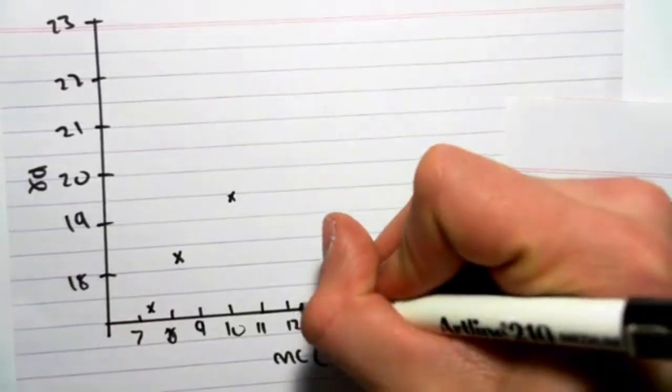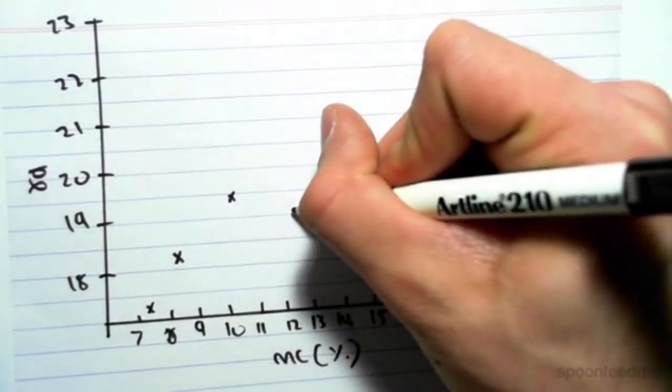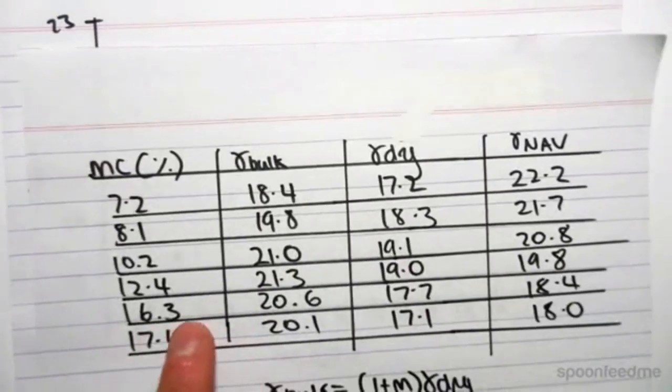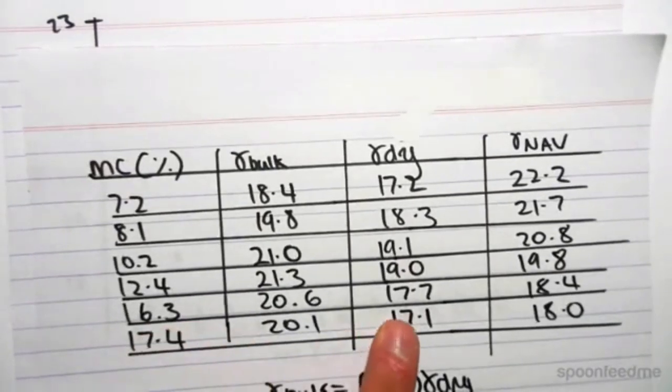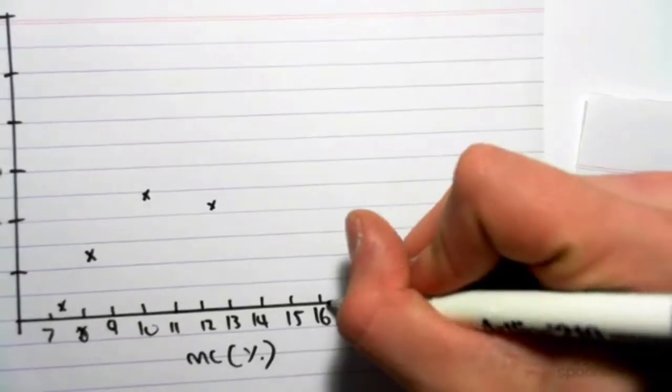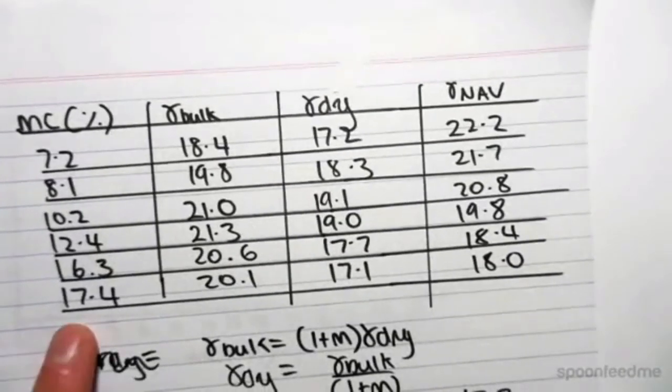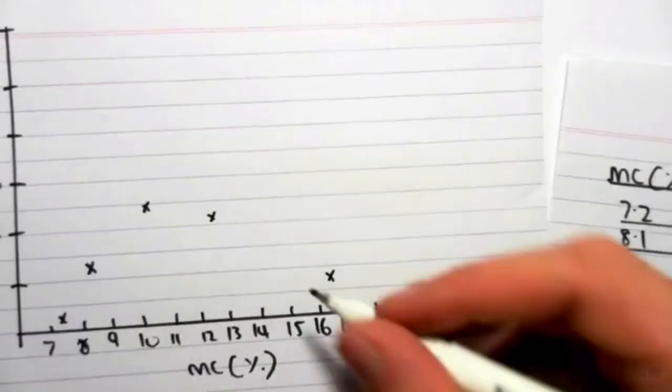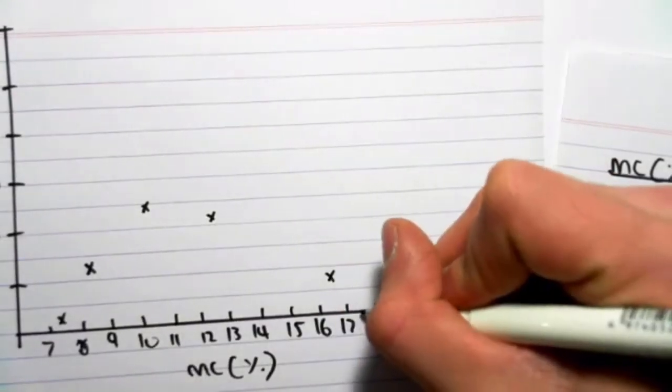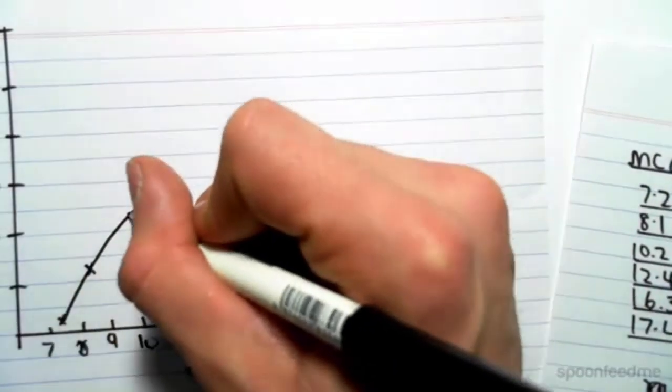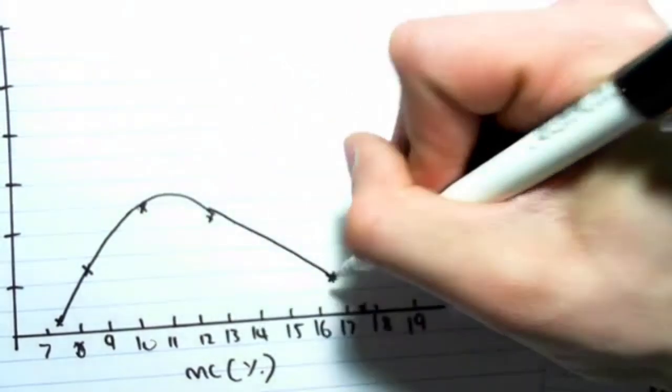16.3 and 17.7. So 16.3 and 17.7. And 17.4 and 7.1. So 17.4 is like just there. If we were to connect this curve up, it would look something like this.